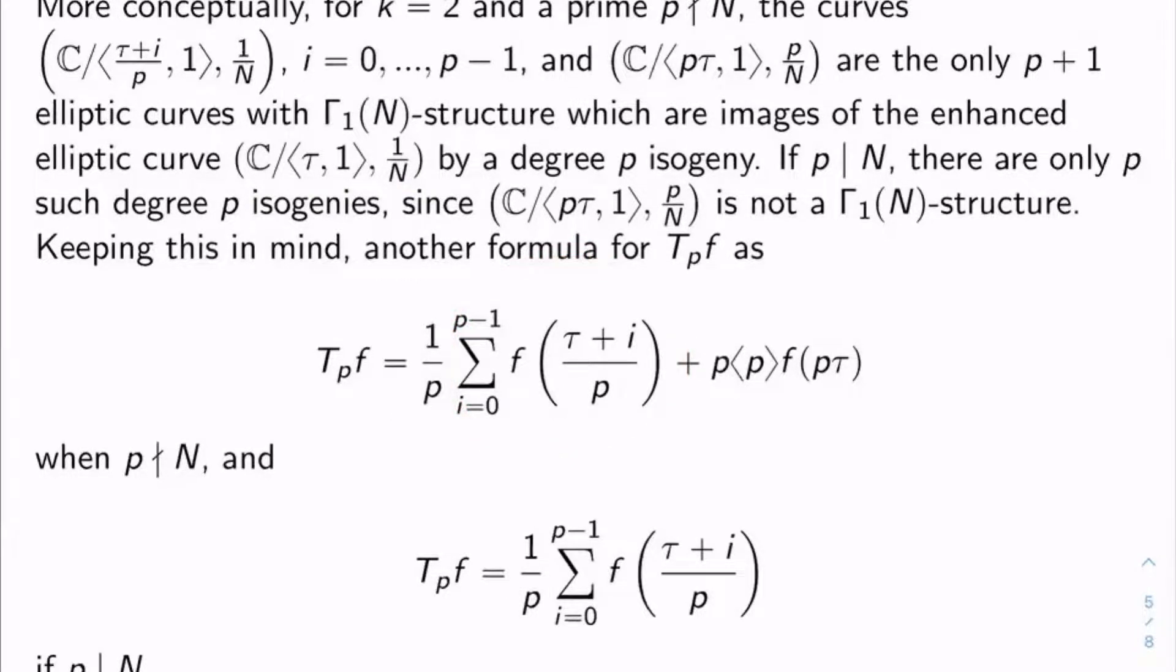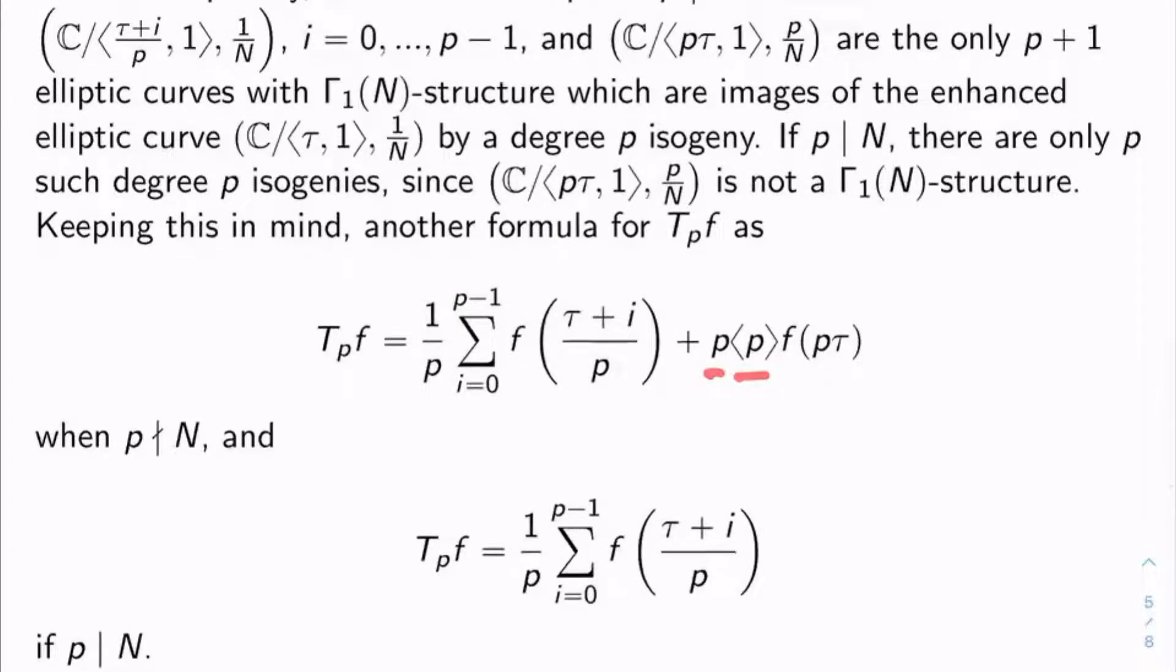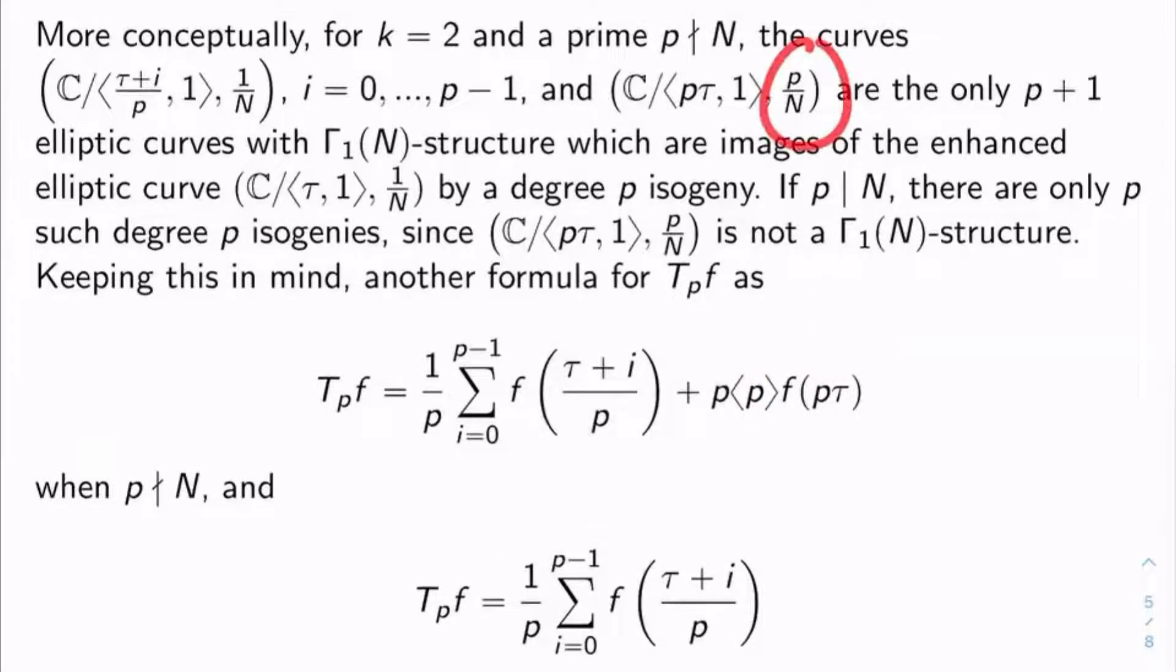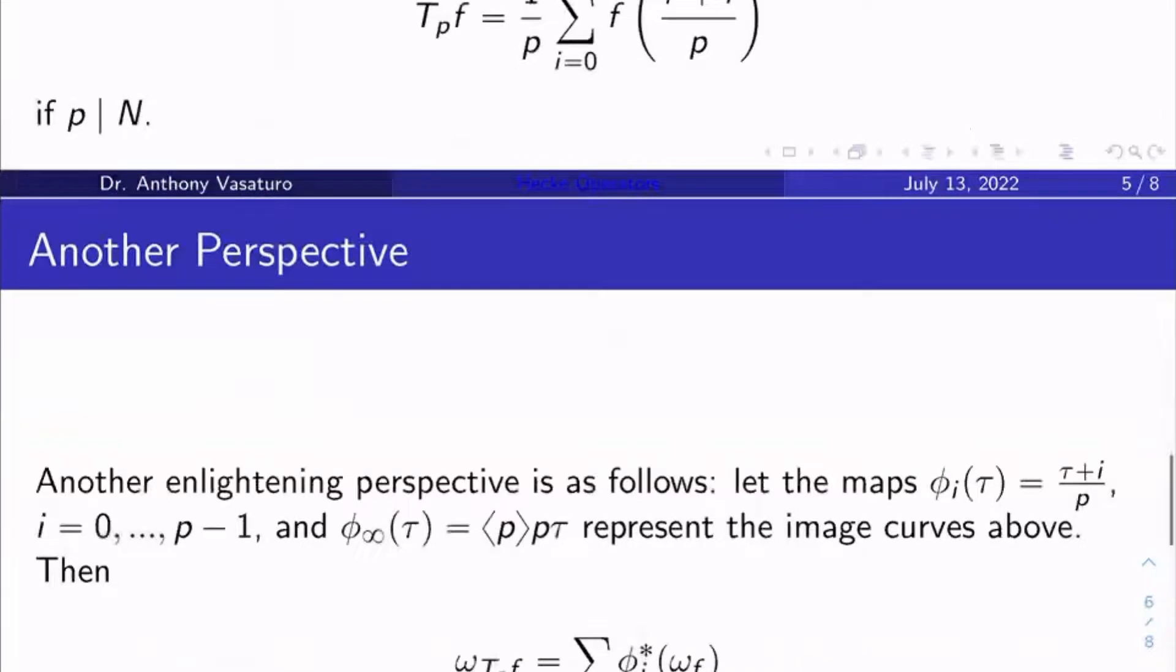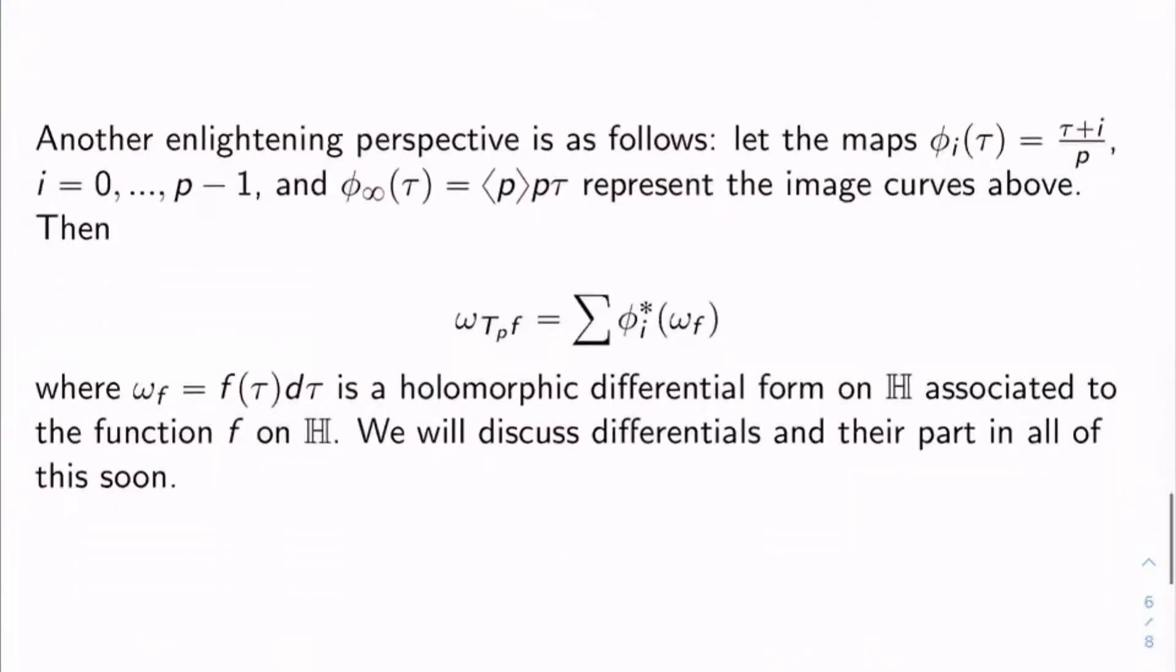And then why is there this extra p diamond p in front of the f of p tau here? It's basically because your point here is no longer 1 over n, it's p over n. So there's this extra factor out front to make things kind of go right. But I mean, the real answer is go back to the video on the Hecke correspondences, and you'll see exactly that there's also a p diamond p in the moduli/orbit theoretic interpretations of the Hecke correspondences. So things match up perfectly.